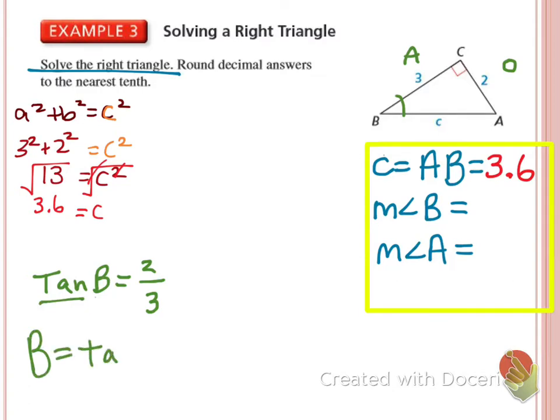So hit shift tangent. And this will pop up in your calculator. Then type in 2 over 3. And what do we get? 33.7. Just keeping you on your toes.